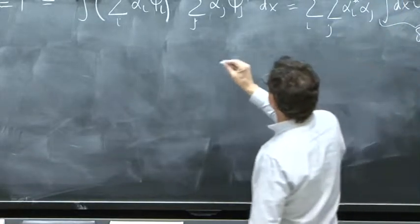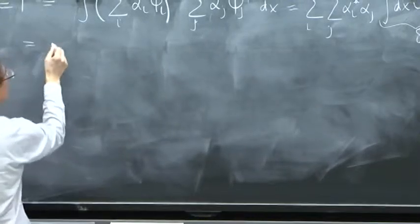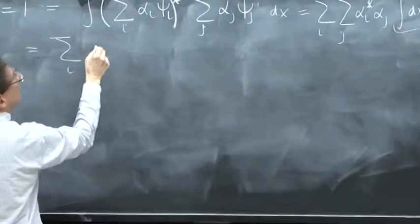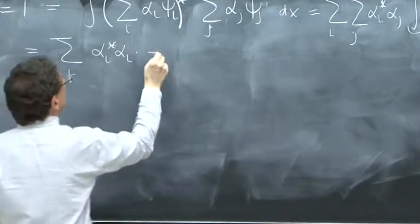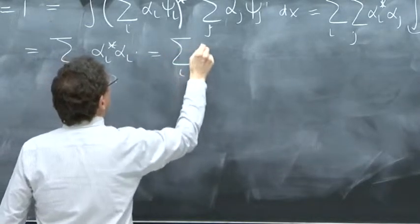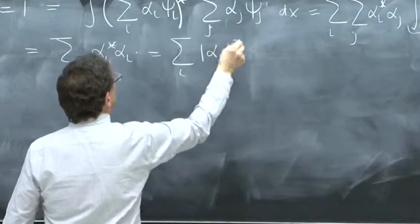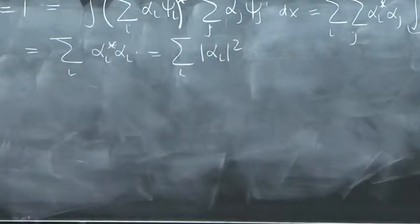Therefore, j becomes equal to i. And you get sum over i of alpha i star alpha i, which is the sum over i of the alpha i squared. So that's what it says.